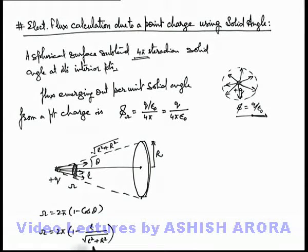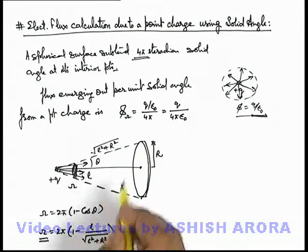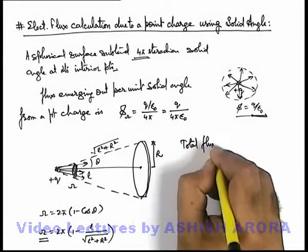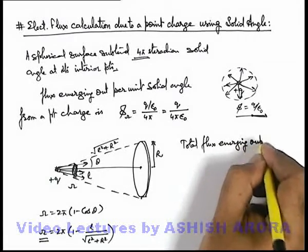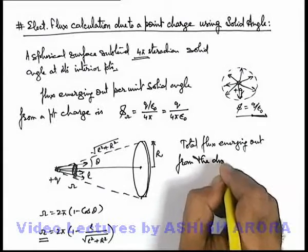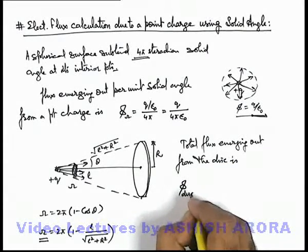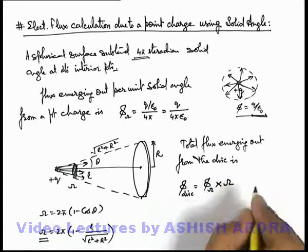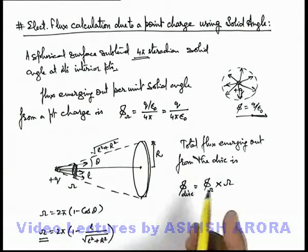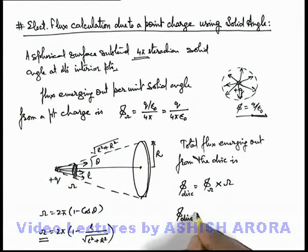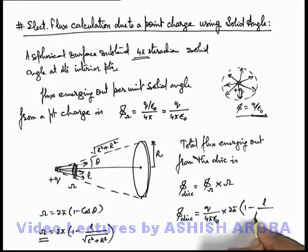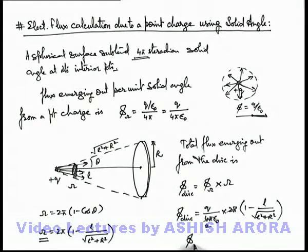Substituting the value of omega, the total flux emerging out through the disc equals flux per unit solid angle multiplied by the total solid angle enclosed by the cone. So flux through the disc equals q/(4π epsilon not) times 2π(1 − l/√(l² + r²)). The 2π cancels, giving the flux from the disc as q/(2 epsilon not) times (1 − l/√(l² + r²)).